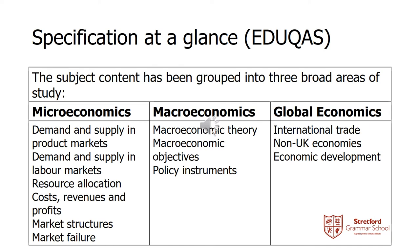And what that means is we look at demand and supply and product markets, moving on into labour markets. We look at resource allocation, the impact of costs and revenues in organisations. And then later on in year 13 we'll go on to market structures and market failure.